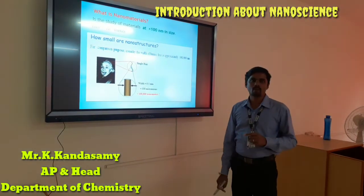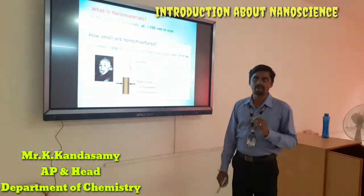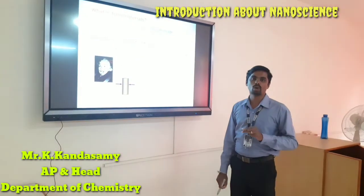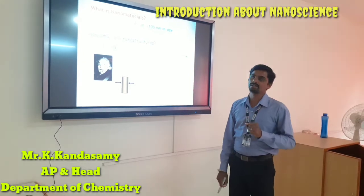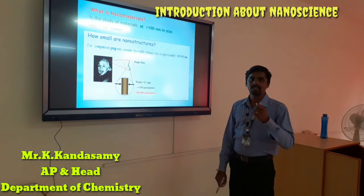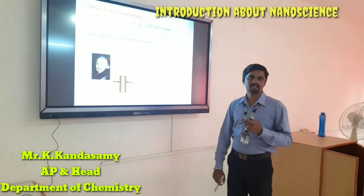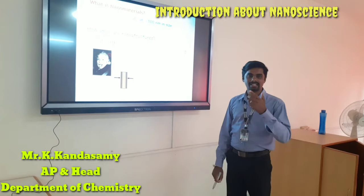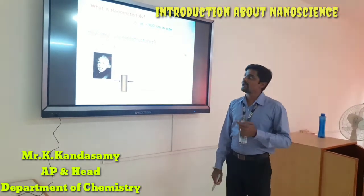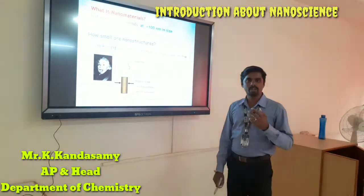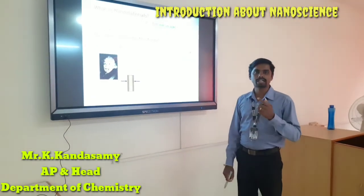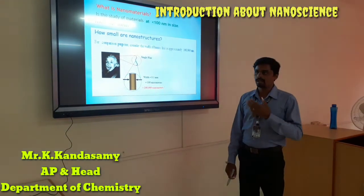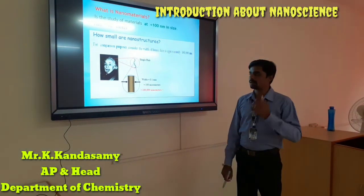We go on to what are nanometers or nanomaterials. What is nanomaterials? It is a study about materials less than 100 nanometers — that is called nanomaterials. Especially in terms of particle size, less than 100 nanometers, we call that nanoscale. One nanometer is equal to 10 to the power of minus 9 meters. For example, our human hair is around 100,000 nanometers in size.